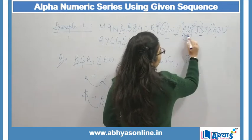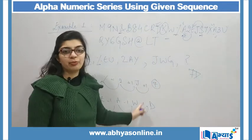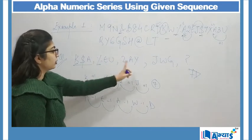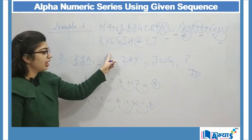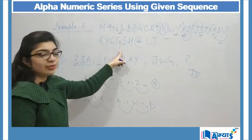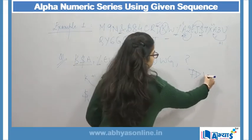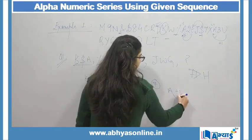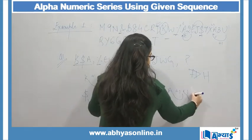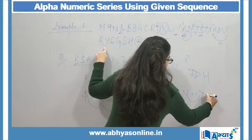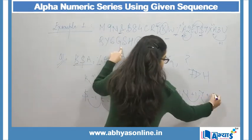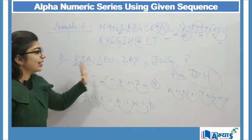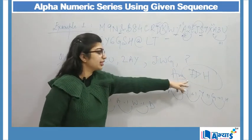Now A se U tak dekhte hain. Agar mein A se U yahan dekhungi toh bahot zyada gap hai. Mujhe pata hai mera skip-one ka aa raha hai. So I will consider A and say plus one — U. Again from U, plus one — Y. From Y, plus one — G. And from G, plus one — H. So my required sub-series is complete: U, Y, G, H.